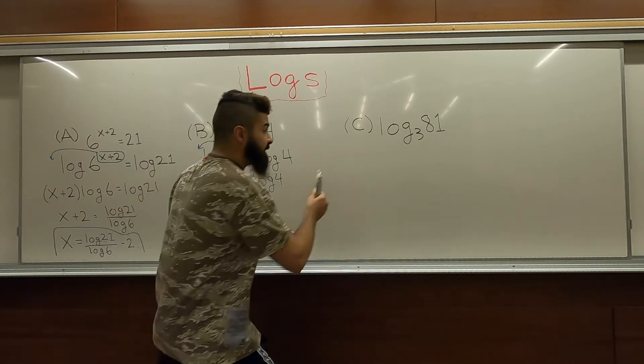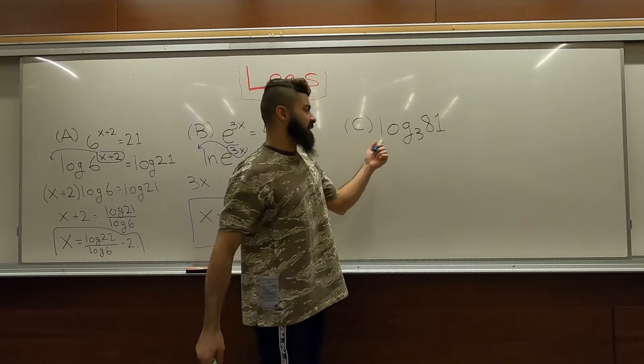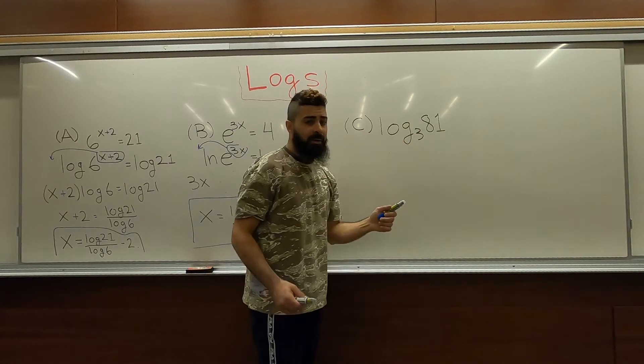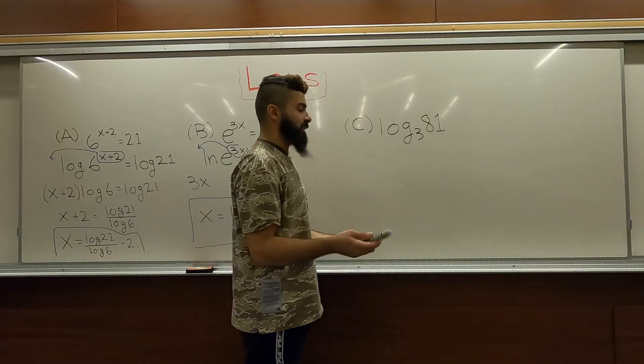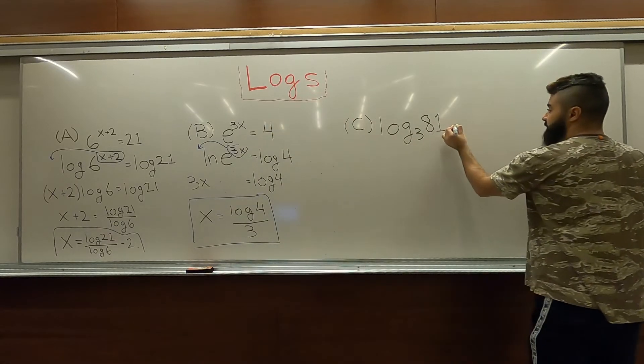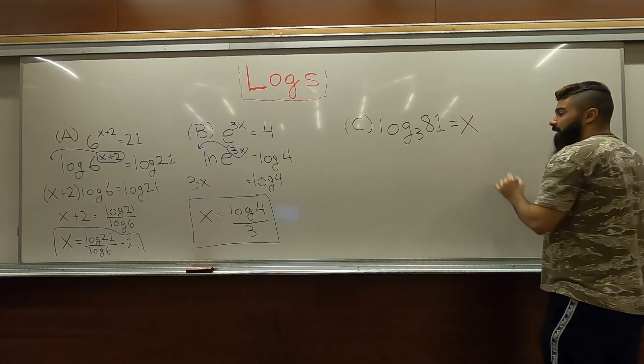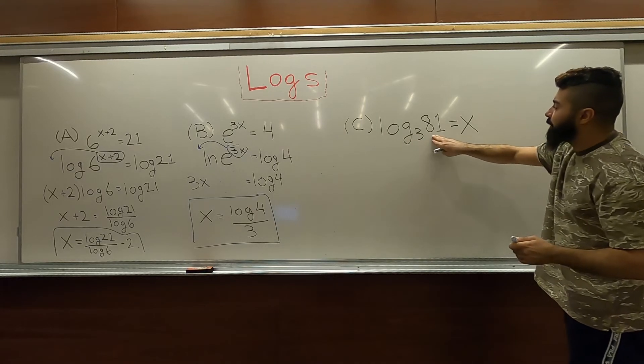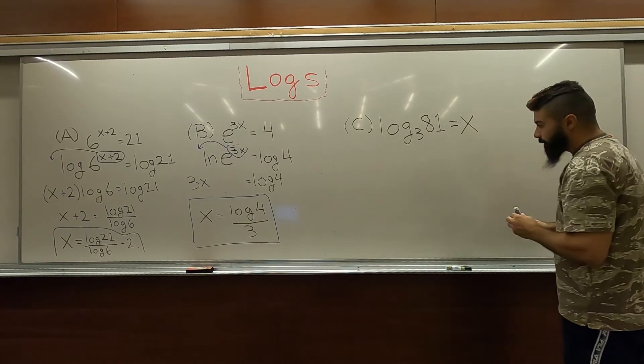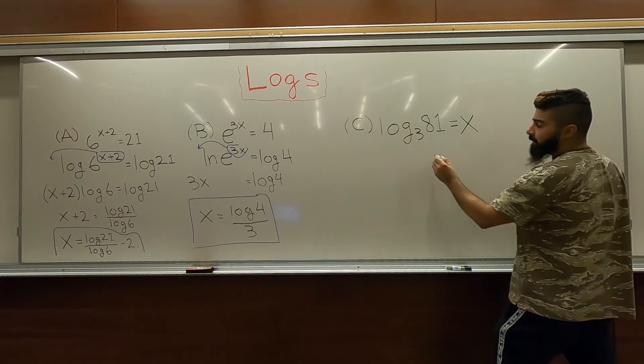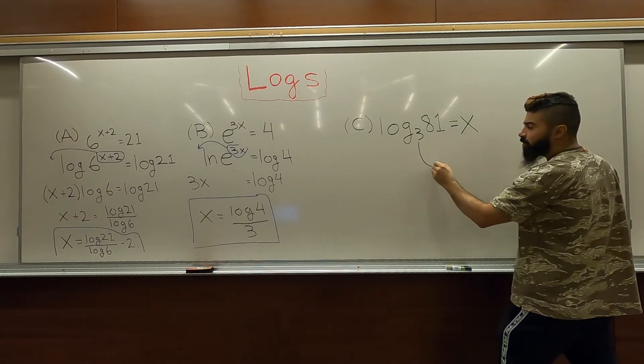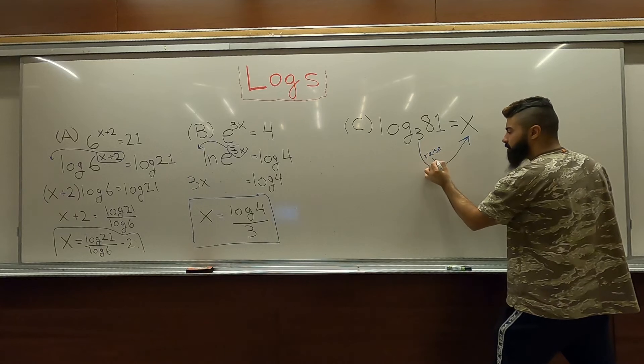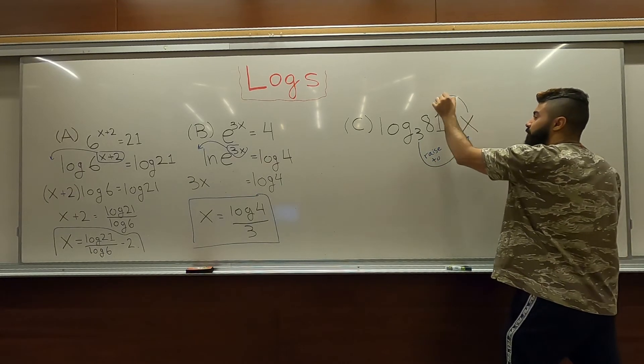Last one, C. If you're given something that says log base 3 of 81, first thing you do, you set it equal to something, right? We want to know what it equals. So, we set equal to something we don't know, x. Now, here, when you have log with a base and then a bigger number equal to something, there's a nice little trick for this one too. It's always going to be this number raised to this power equals this.